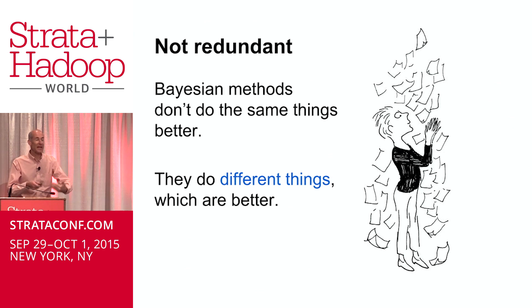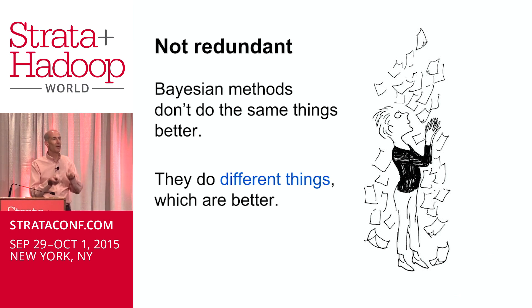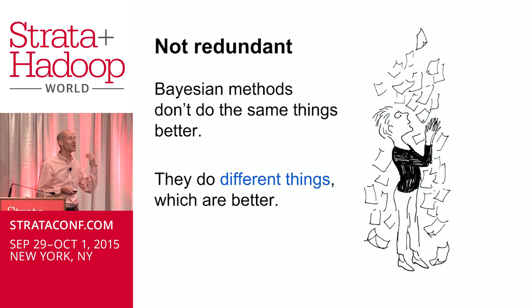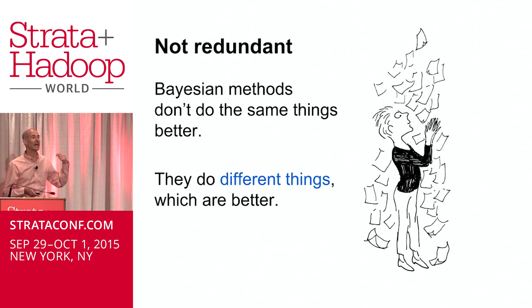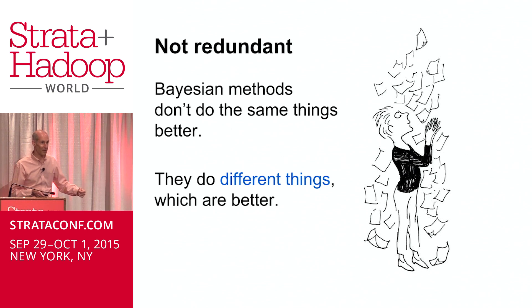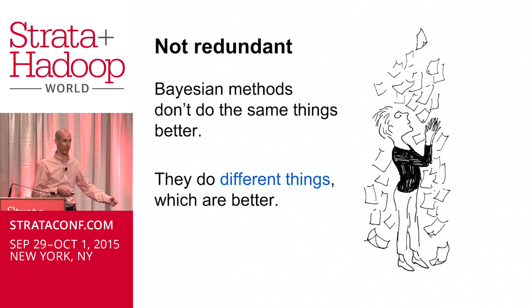This is the basis of my claim that Bayesian methods are not redundant. When you compare Bayesian and frequentist methods, it's not that Bayesian methods are doing the same things better — it's that they allow you to do different things, and those things are better things.